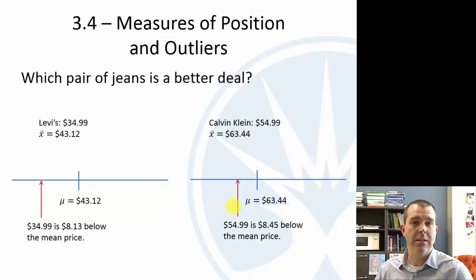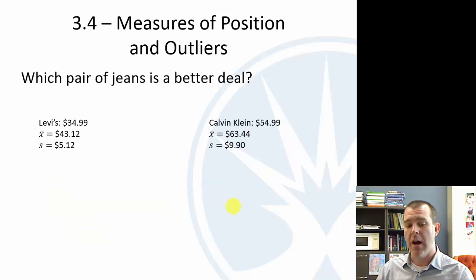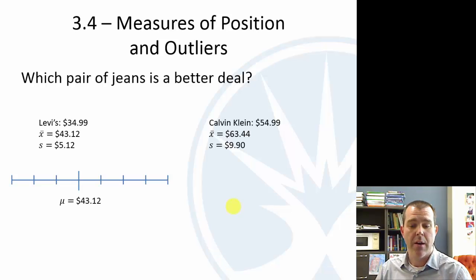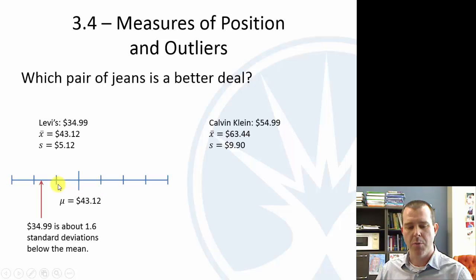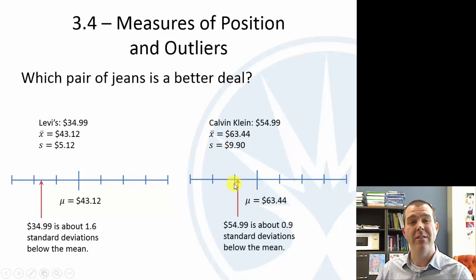So from that, we might say the Calvin Klein seems to be a better deal because compared to the average Calvin Klein jean price, this particular one is farther below that. You may guess though that I wonder if there's more variability. If there are some really cheap Calvin Klein's or really expensive Calvin Klein's, maybe they're not spread out the same. So we might dive a little bit deeper and look at the standard deviation. So you can see that the Levi's jeans, basically as a consequence of their cheaper price, aren't spread out as far. And so if we look at the mean of 43.12, I've got bars here representing number of standard deviations. So the 34.99 is almost two standard deviations, 1.6 standard deviations below the average, whereas the Calvin Klein is about one standard deviation below.